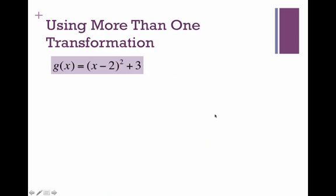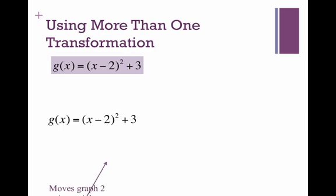Here's another one, g of x equals x minus 2 in parentheses all squared plus 3. So again, we need to identify what these do. The minus 2 moves the graph 2 units to the right.